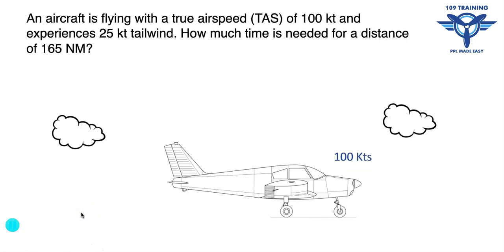The problem states we're flying an aircraft at true airspeed of 100 knots. In the cockpit you'll see indicated airspeed. If you've got a fancy Garmin display you might have true airspeed indicated as well, or you'll have calculated your expected true airspeed for that altitude. You've got a tailwind of 25 knots. How much time is needed for a distance of 165 nautical miles?